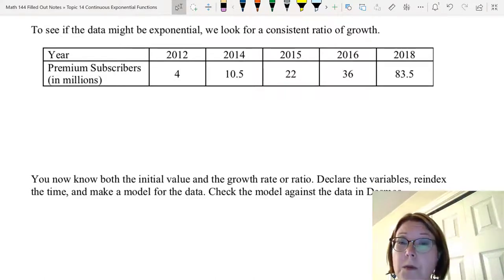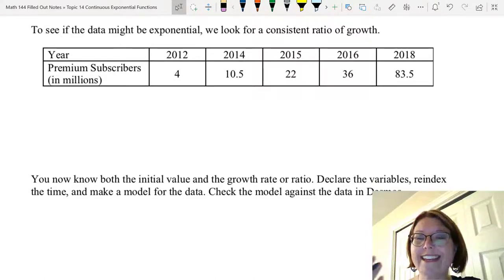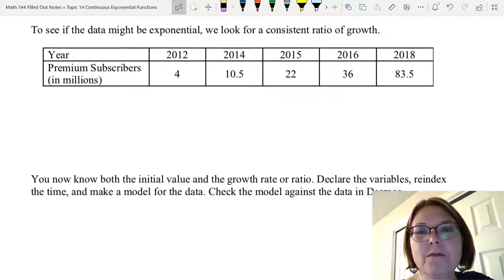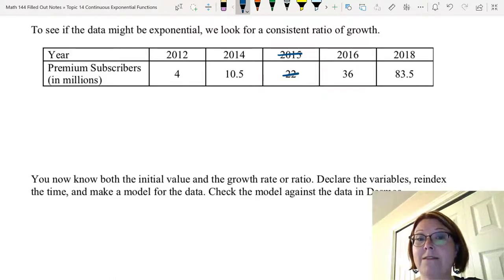Now when we calculate growth ratios, we don't take into account the fact that the years might not be evenly spaced. For this reason, I'm only going to use the years that are evenly spaced. In other words, I'm just going to remove the data point 2015-22 from the set of data, leaving me with 4 pairs of data that are evenly spaced.